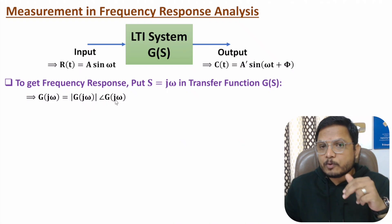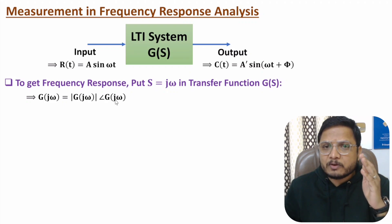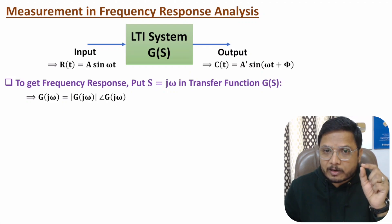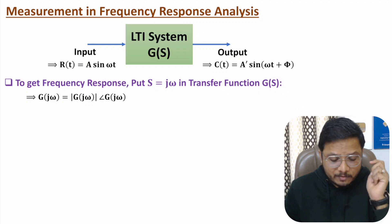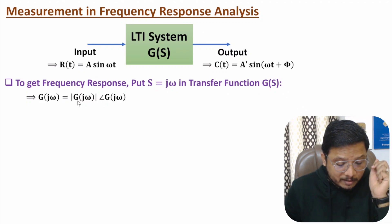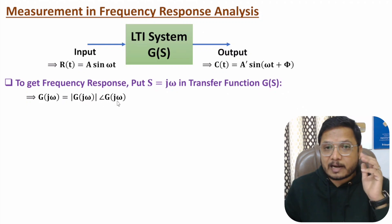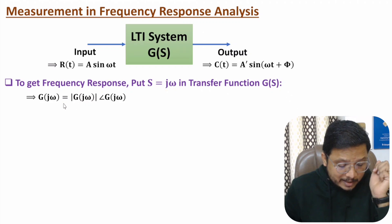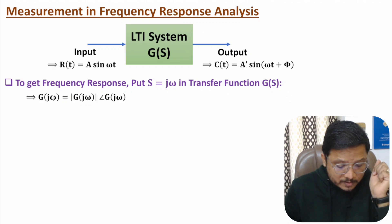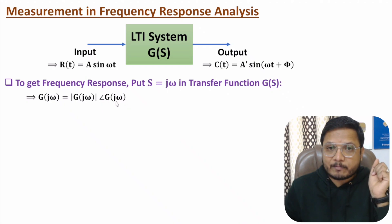In future videos I will explain different methods like Bode plot, Nyquist plot, and polar plot, in which I will explain how to identify magnitude and phase. For now, understand that with any system, if you substitute s = jω, there will be a magnitude and a phase.